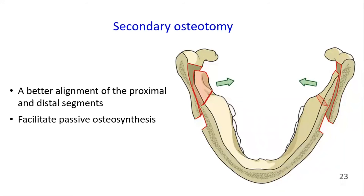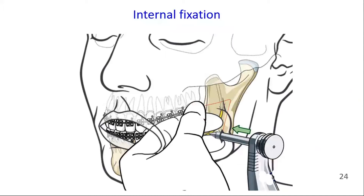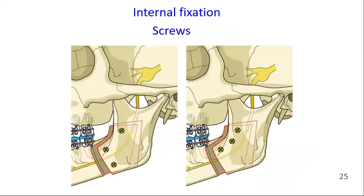This will allow for better alignment of the proximal and distal segments and facilitate osteosynthesis. Internal fixation is usually performed with positioning screws, plates, or a combination. Screw placement is usually performed with either transbuccal instrumentation or angulated drills and screwdrivers. A minimum of two, and preferably three, bicortical position screws are placed between the buccal and lingual cortices. Care should be taken to avoid damaging the inferior alveolar nerve. Two possible patterns of screw placement are demonstrated here.